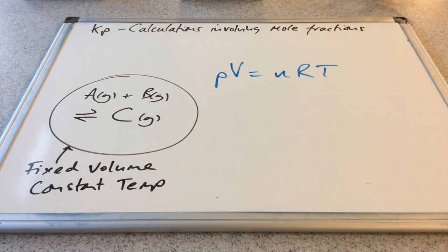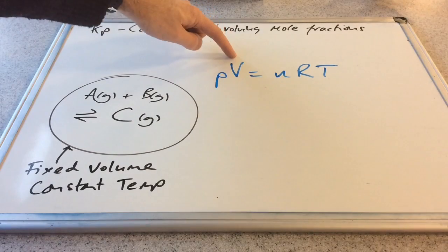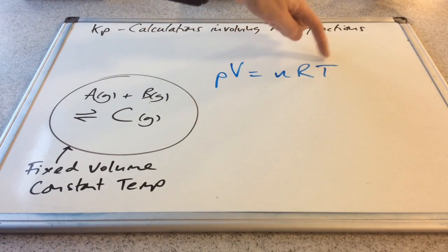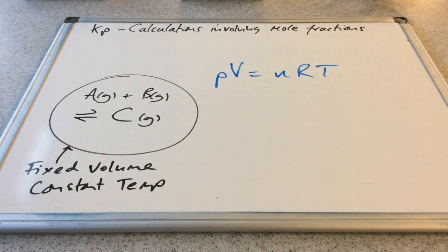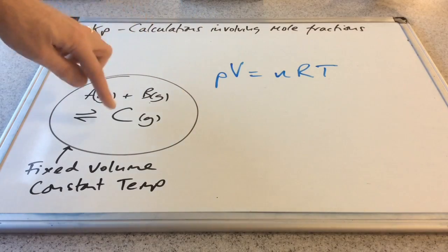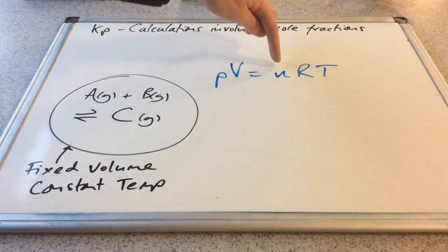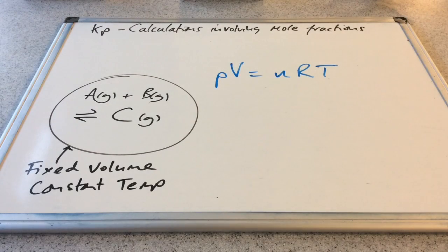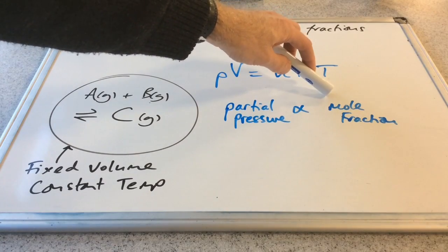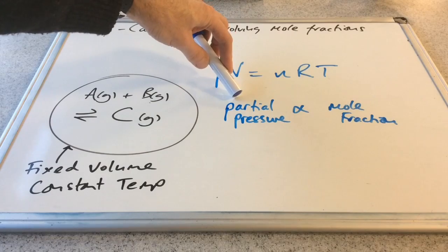I've written the ideal gas equation down. Volume's constant, R is a constant (8.314), and temperature's constant. It follows therefore that the pressure, or the partial pressure, of the individual components is going to be proportional to the number of moles of that component. So in KP terms, the partial pressure of a component is proportional to its mole fraction — the more moles you've got of a component, the greater its partial pressure will be.